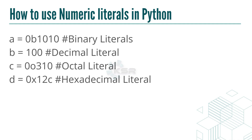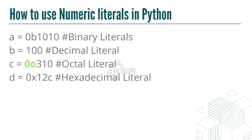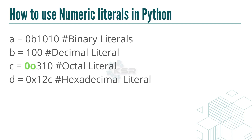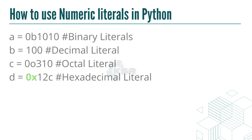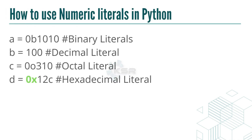Decimal is base 10, which is what we commonly use. To represent binary, we prefix with '0b' — for example, '0b1011'. Octal uses the prefix '0o', and hexadecimal uses '0x'. So: '0b' is binary (base 2), '0o' is octal (base 8), and '0x' is hexadecimal (base 16).